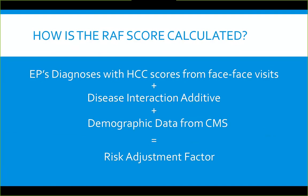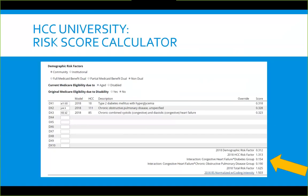The RAF score is calculated from diagnoses submitted from face-to-face visits, which are added to disease interaction additives, plus a demographic layer from CMS covering gender, age, community vs. institutional setting. Eligible providers are anyone within their scope of practice who can diagnose a patient. Hospitalizations are included and it is not specialty-specific. Diagnoses from lab and X-ray, unfortunately, do not count.